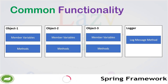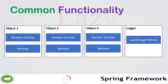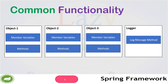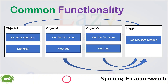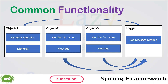But we still have the problem of tight coupling. In objects 1, 2, and 3, we still have code calling the logger message method. Whenever anything needs to be changed, we have to change it in all three objects. Also, the logger class, even though it has no important business logic, has more dependencies, making the code more tightly coupled and less extensible.